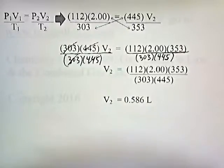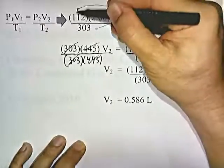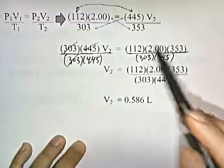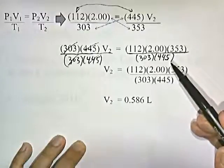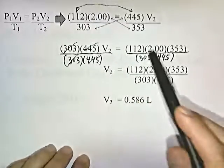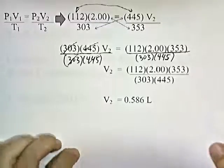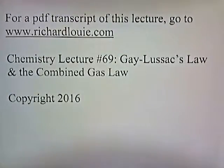The volume decreased. The temperature increase wasn't enough to expand the volume, and the large increase in pressure from 112 to 445 kilopascals had a greater effect, squashing the volume smaller. The increase in temperature wasn't enough to compensate for the squashing effect of the pressure. For a PDF transcript of this lecture, go to www.richardlui.com. This has been Chemistry Lecture Number 69: Gay-Lussac's Law and the Combined Gas Law.